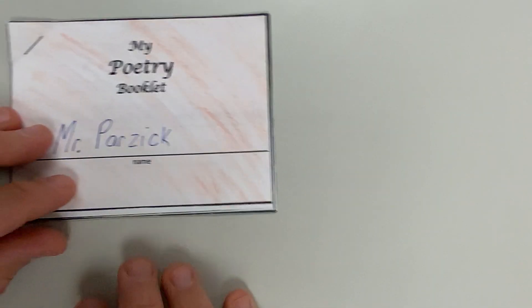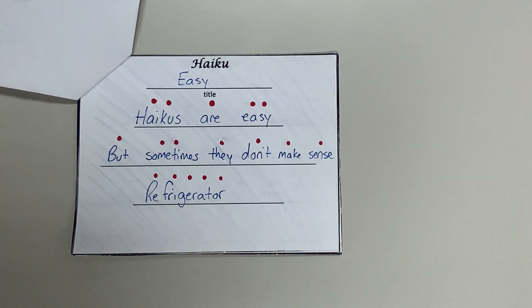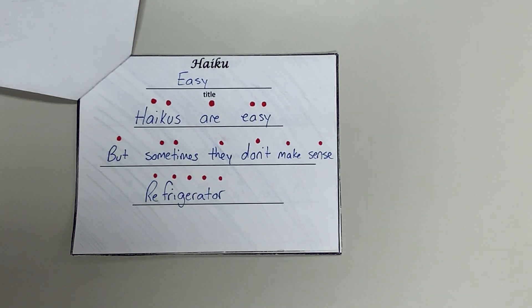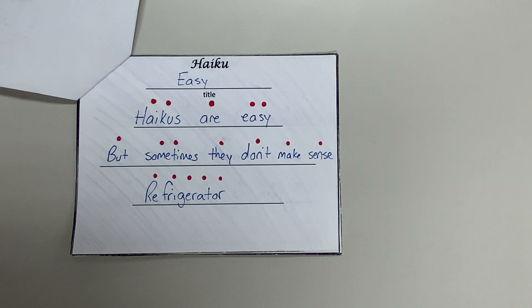Let me show you a couple of examples — these aren't in any particular order. You can see I started with a haiku. For any poem that is based on syllables, I want you to put dots above the words to show how many syllables are in each word. For instance, 'haiku' has two syllables — two dots. 'Refrigerator' has five syllables — five dots. That's going to help me grade these. A haiku is five, seven, five, so if you put refrigerator as six syllables, I'll know what your mistake is and can still give you credit. You can also see an example of my metaphor poem here.